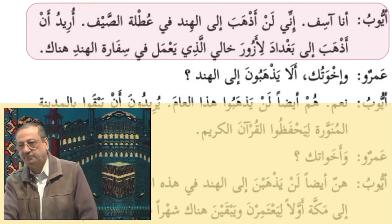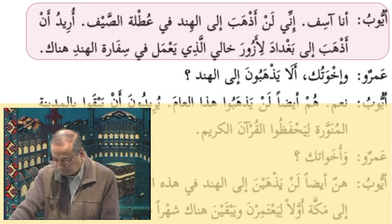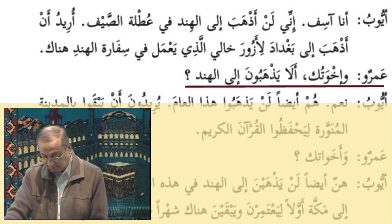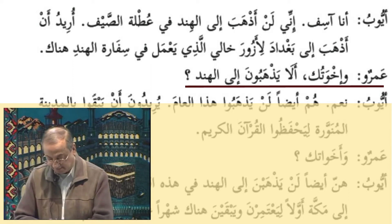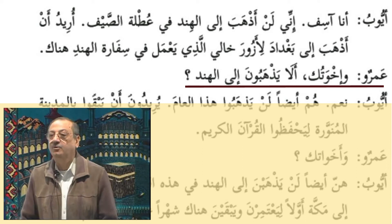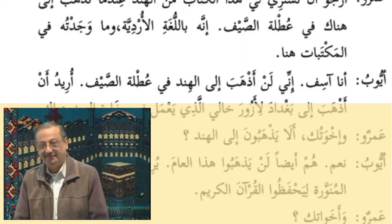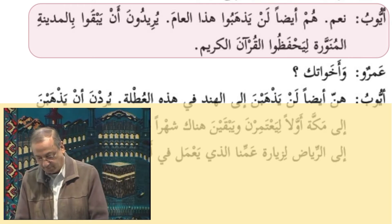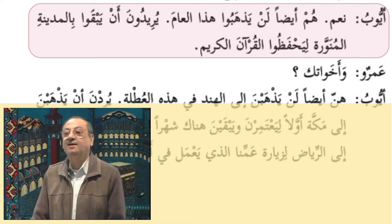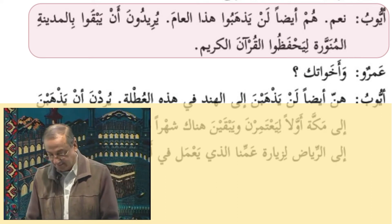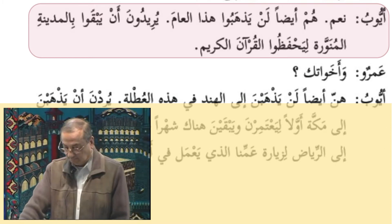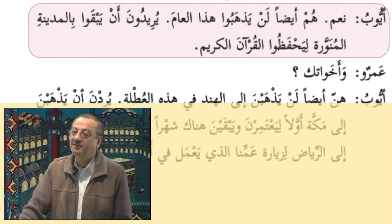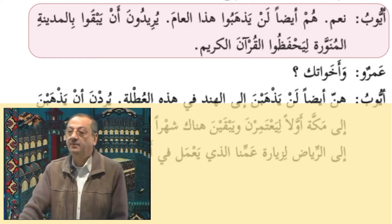Amroon - Ikhwatuka - what is the meaning of this? And your brothers. Alaa yazabuna ilal Hind? Are they not going to India? Naam. They also - hum aidan - lan yazabu hazal aam. They will not be going this year. Yazabu: fa'ilun mudariun mansubun bi hadifinun. What is hazal here? Al-aamah is actually Zarf, but hazal came before it, so hazal takes place of the Zarf. And what is al-aamah then? Badal.